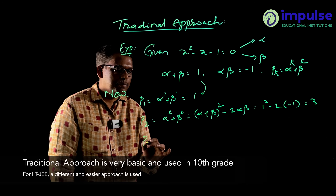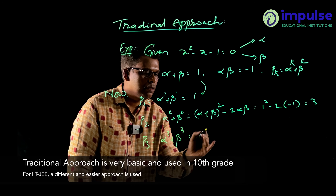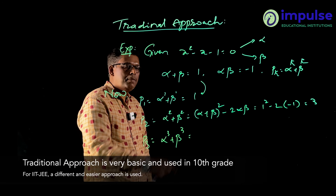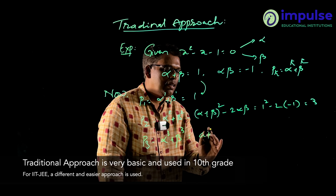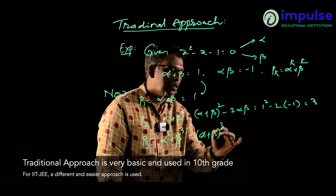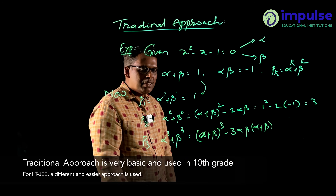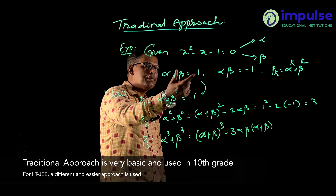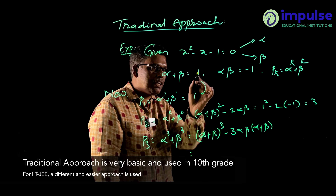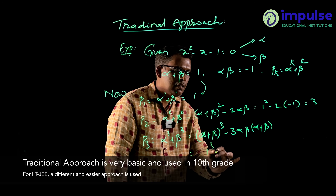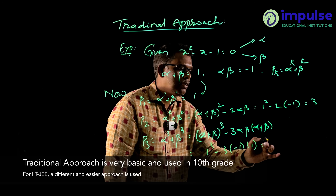Now let us calculate p3 = alpha³ + beta³. We know that a³ + b³ = (a + b)³ - 3ab(a + b). We convert this in terms of the sum and product of the roots. Plugging in: alpha + beta = 1 and alpha·beta = -1, so p3 = (1)³ - 3(-1)(1) = 1 + 3 = 4.